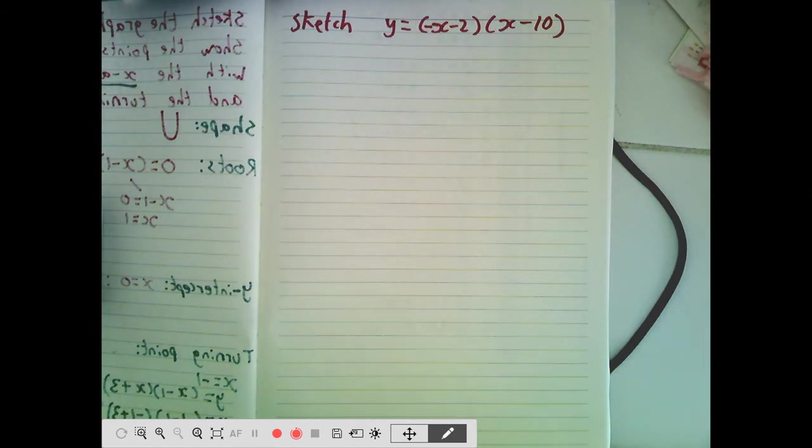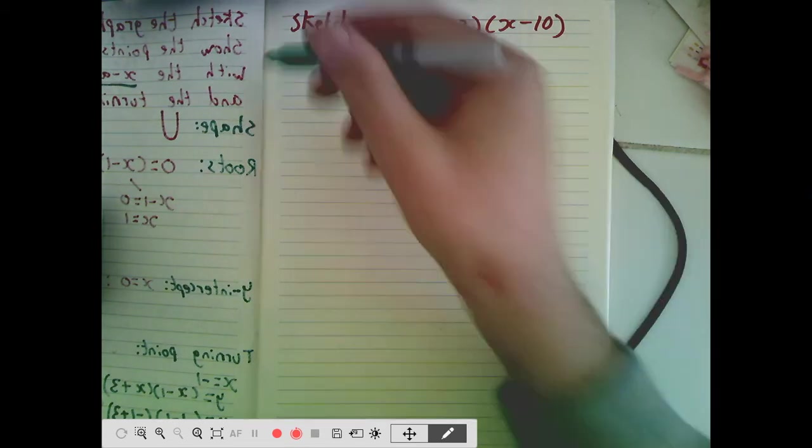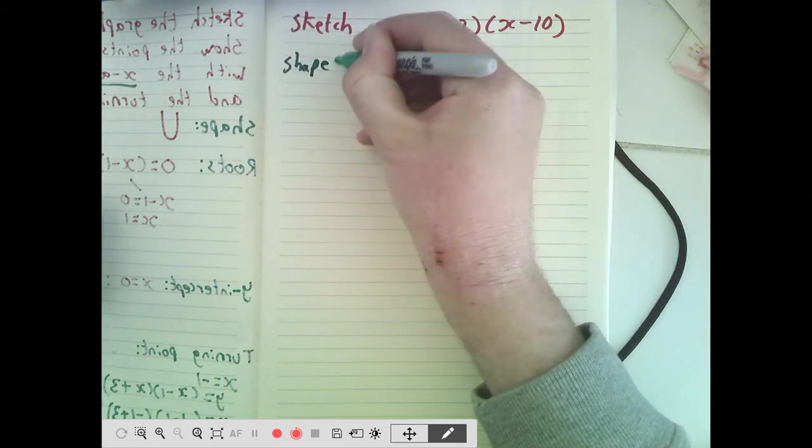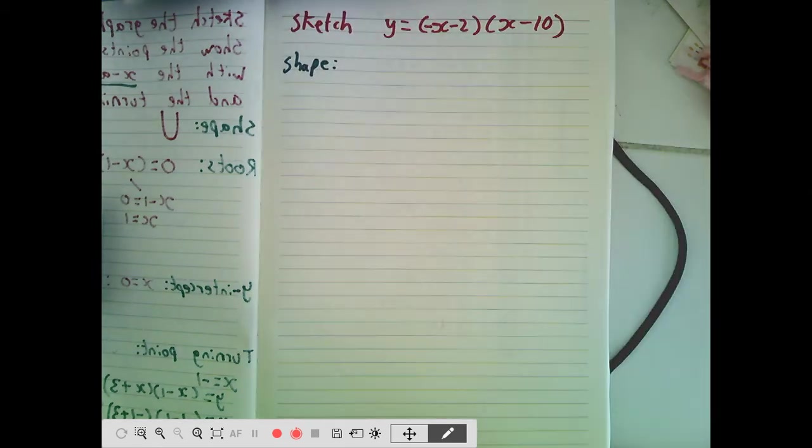And again, the question, if this was an actual SQA nat 5 question, it would be saying things like you must include the coordinates of the points of intersection with the x and y axis and also include the turning point. So we're just going to assume that's all the information that we've been asked to provide. So let's go through a checklist of what we want. The first thing we need to know is what is the shape of this graph? Is it a U-shaped or an N-shape?